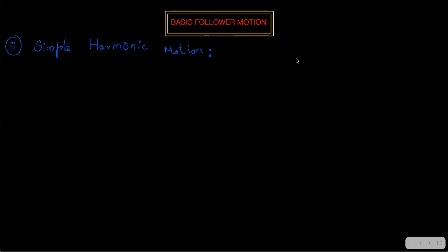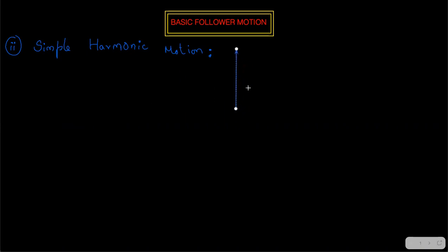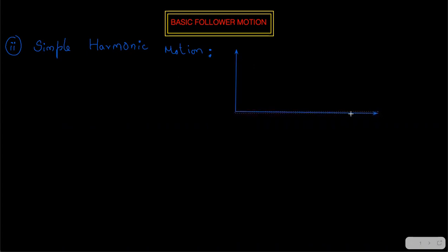We have a graphical representation which we are going to show now. This is our y-axis, and from this we are going to derive the required equations. We also have the x-axis, and we are going to define the motion only for the rise part, because the return part will be similar to the rise part.